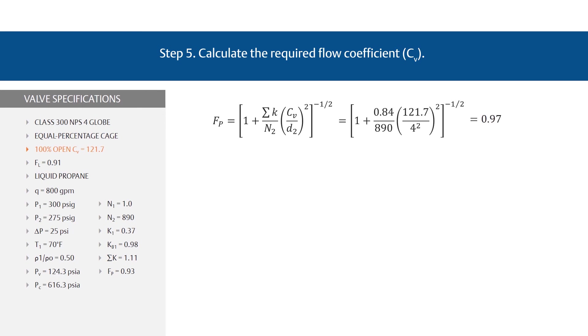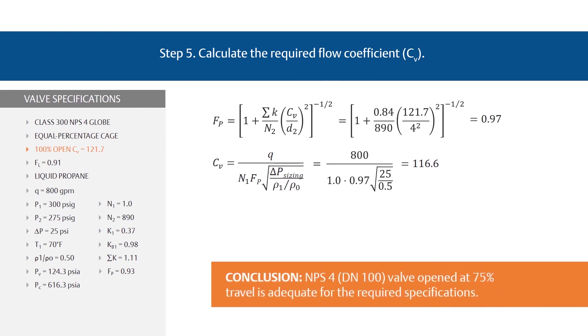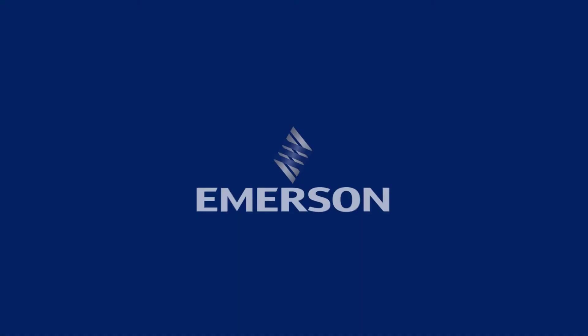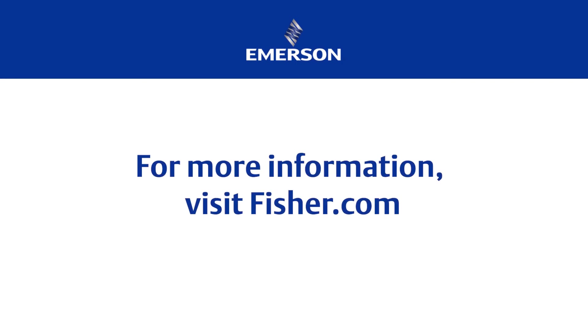Now plug this F sub P value into the CV equation for a final CV of 116.6. Because this newly determined CV is very close to the CV used initially for this recalculation, 116.6 versus 121.7, the valve sizing procedure is complete. The conclusion is that an NPS 4 valve opened to about 75% of total travel should be adequate for the required specifications. So that's the process for sizing a valve for liquid flow. Visit Fisher.com or contact your local Emerson sales office for more information.